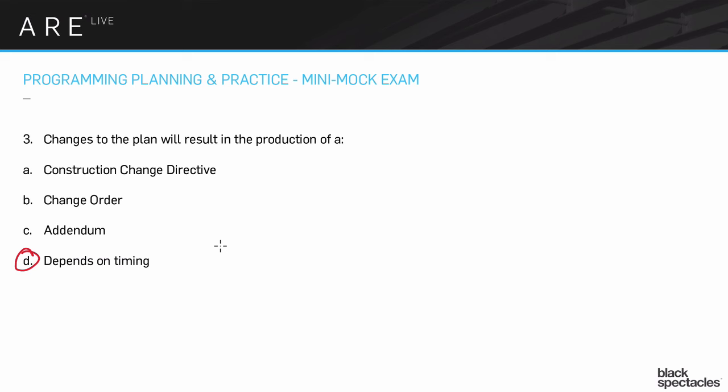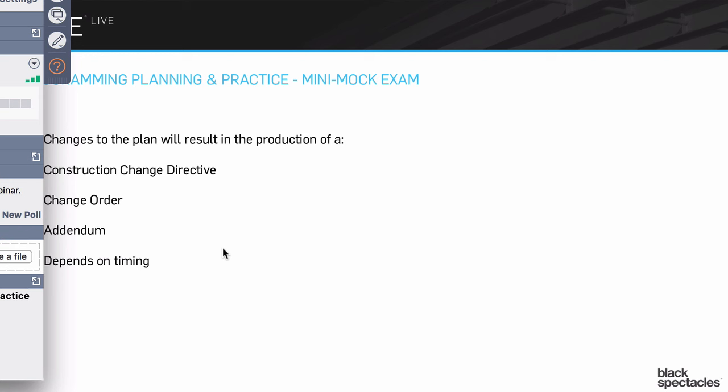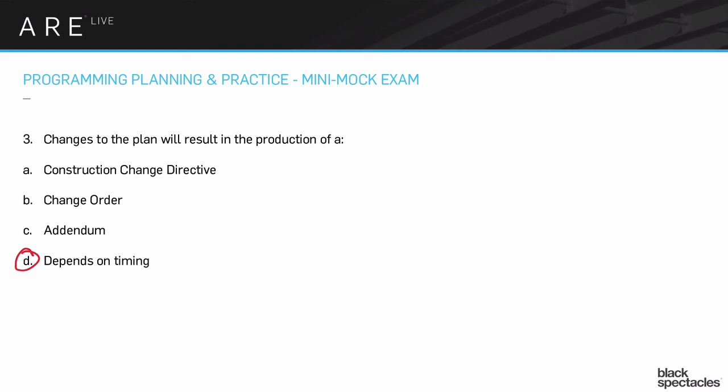Once we have a general contractor chosen, once we have a bidder chosen, then a change is a change to the contract. And so when their bid was accepted and the contract was all put together, your drawings, the specifications, the addendums, all that stuff becomes part of the contract between the owner and the contractor. So that's all the contract. And then if something needs to get changed, and it happens all the time, lots of things change, something needs to get changed, you are changing the contract. So that's a change order.